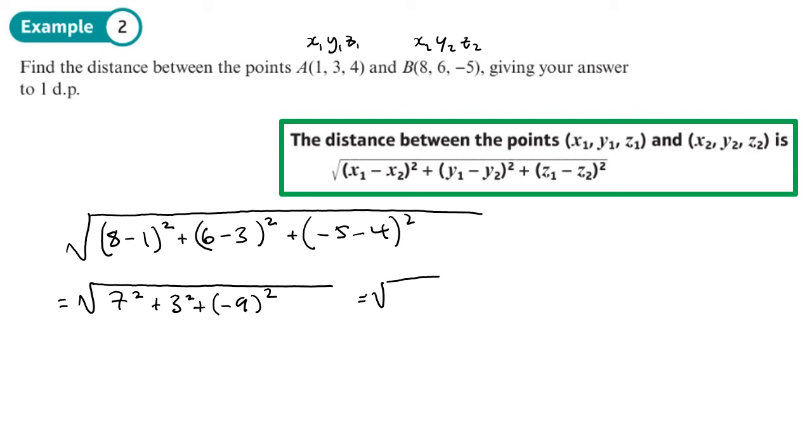That's going to be 49 plus 9, which is 58, plus 81. I'm not going to do that in my head. I should do, really. 49 plus 9 plus 81. Now, that's not a square number. It doesn't simplify. And if I needed to give the answer as a decimal, that would be 11.8 to 3 significant figures. Right, that's a nice short one. You should now be able to do exercise 12a on page 338 of the textbook.